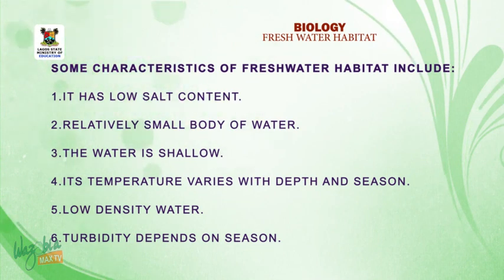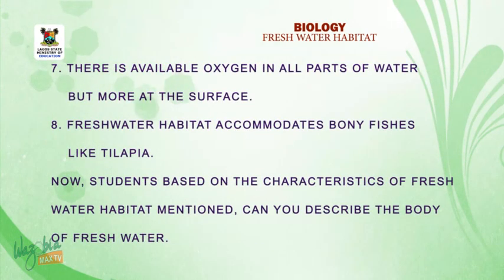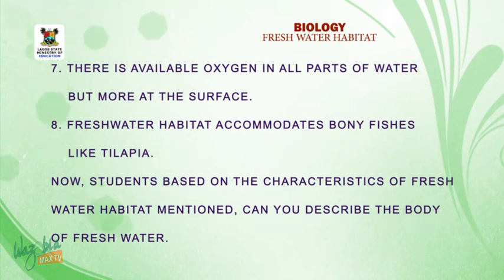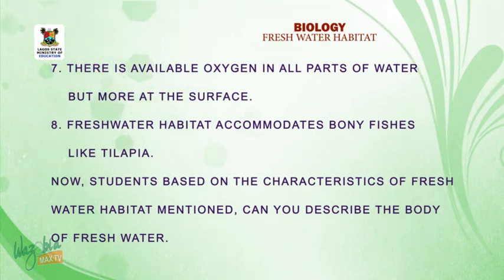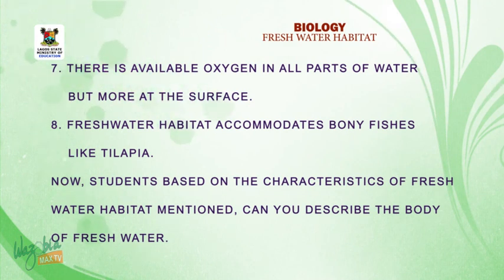Characteristic 6: turbidity depends on the season. Turbidity refers to the cloudiness and haziness of the body of water. Characteristic 7: there is available oxygen in all parts of the water, but more at the surface. Because the water is shallow, oxygen is available throughout every part, but it is more concentrated at the surface.